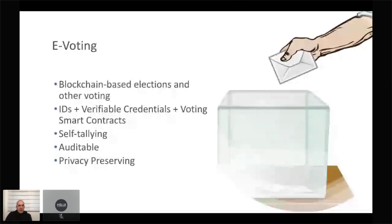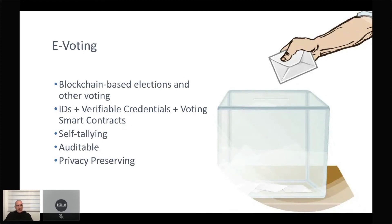The next thing we can do is implement e-voting. E-voting is a great use case for blockchains in general, but it's also much more complex than it first seems. We are now combining identities with verified credentials — like you're allowed to vote in a certain country or context — and then we have a number of voting smart contracts. The obvious advantage is it's self-tallying and auditable, so we don't have to trust the person that makes the voting machine. Anyone can audit this. The difficulty is doing it in a privacy-preserving way, and there are ways of doing it. Decentralized identities can be used for this type of electronic voting in a secure way.